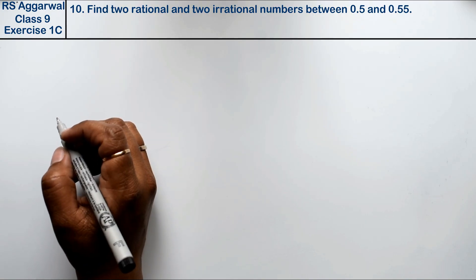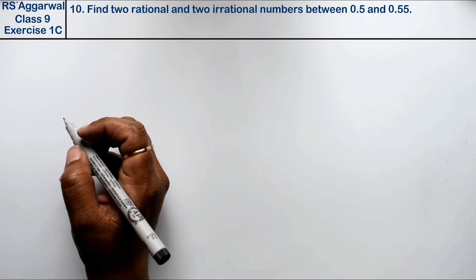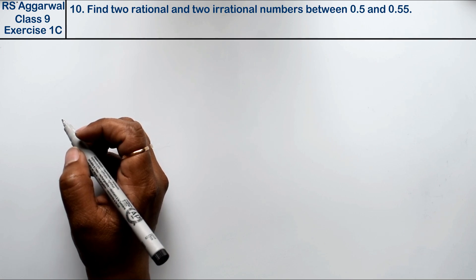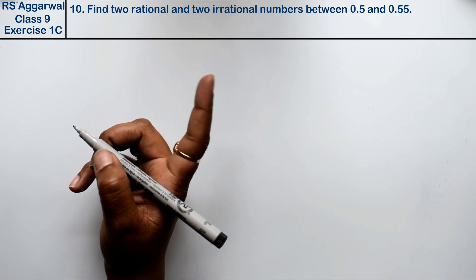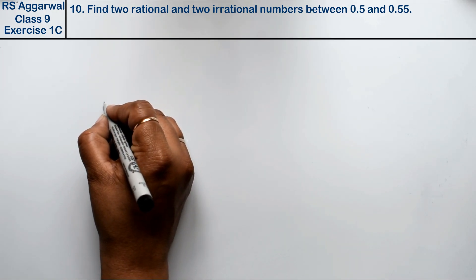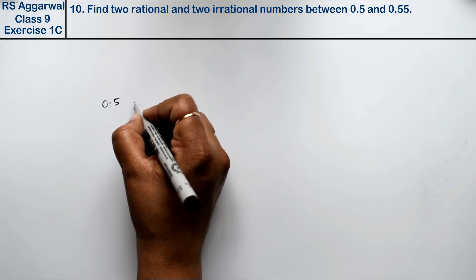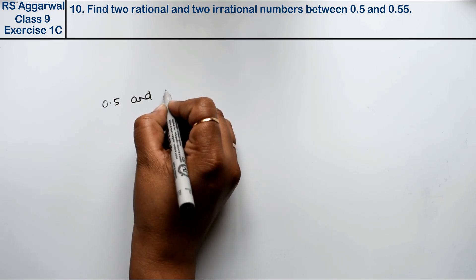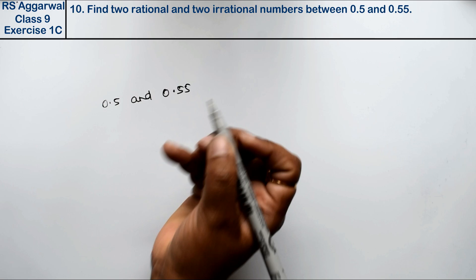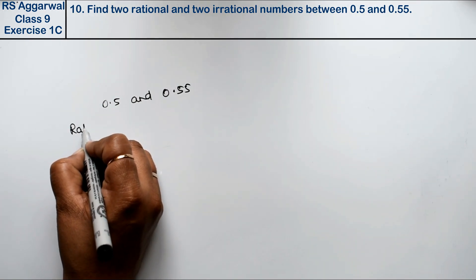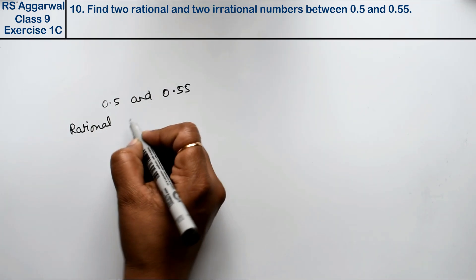Let's do question number 10 of exercise 1C, that is number system. Question number 10 is: find two rational and two irrational numbers between 0.5 and 0.55. Friends, let's first find the rational numbers.